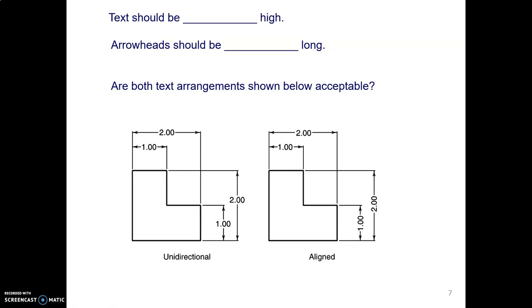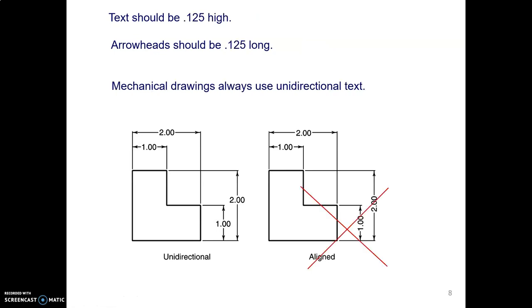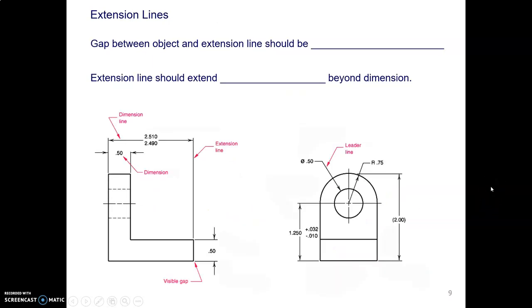Text should be how high? Eighth of an inch high and arrowheads eighth of an inch long. And in mechanical drawings, the text is always horizontal. Extension lines, a 32nd to a 16th. And extension lines extend an eighth of an inch beyond. Oh, you may need to set that up in your title block, come to think of it. So this is probably worth noting.